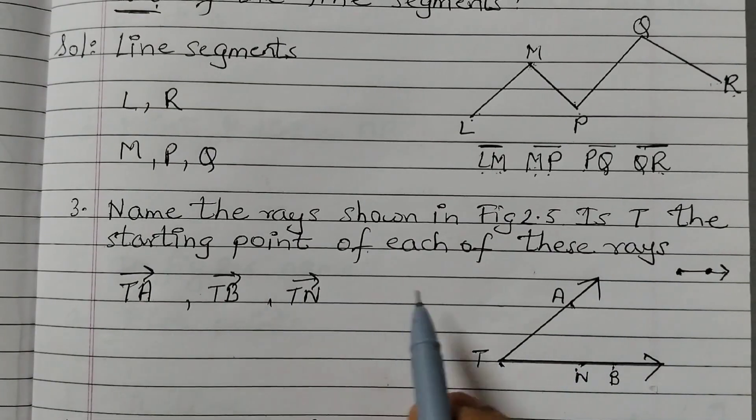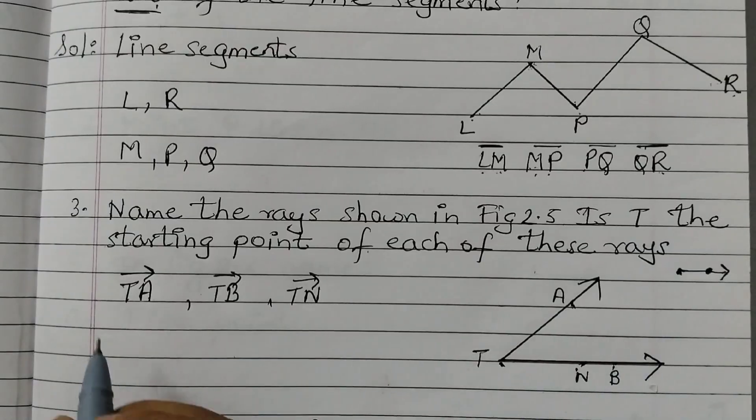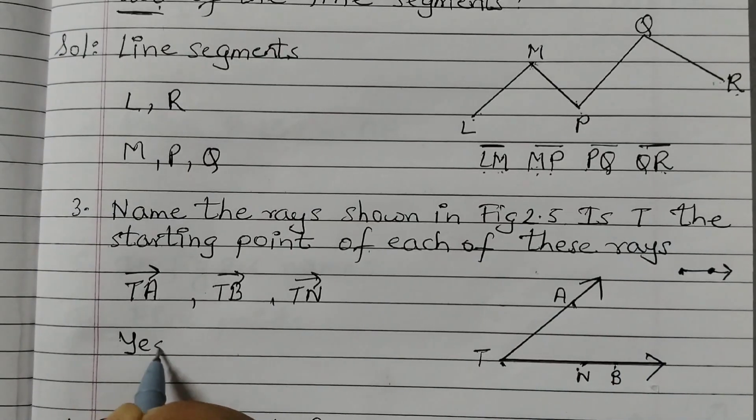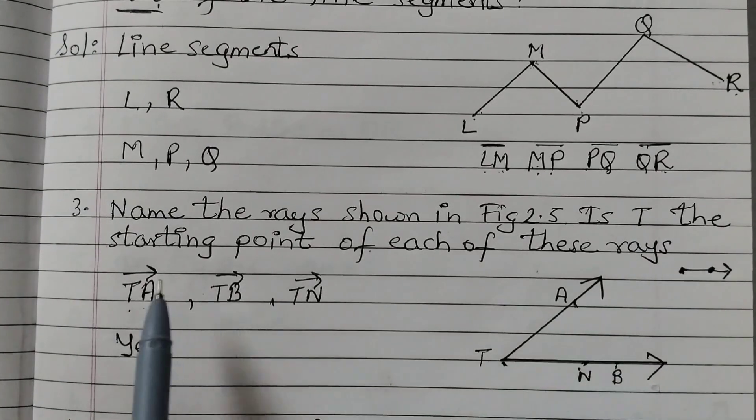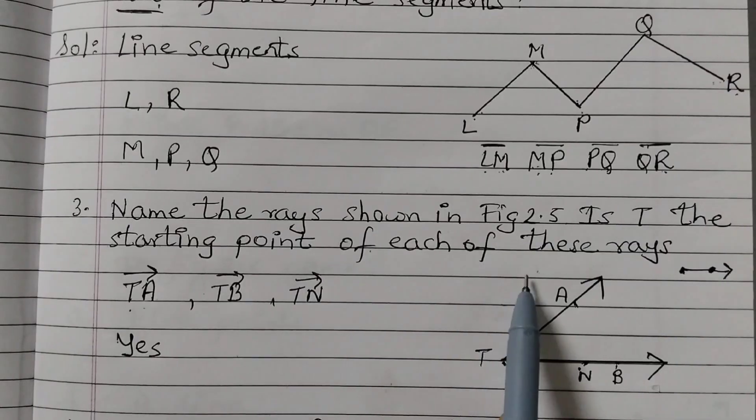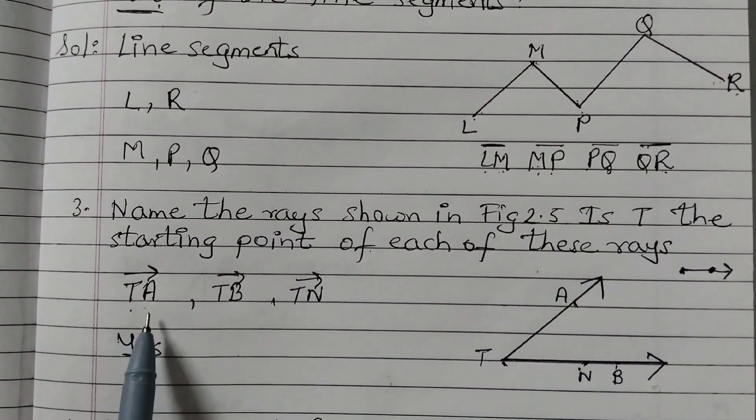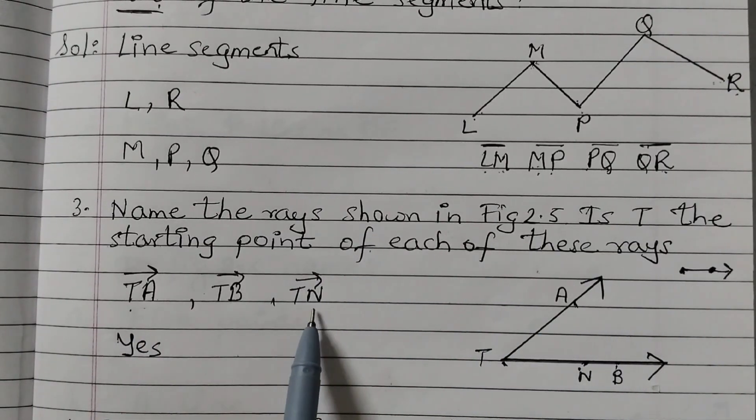Now is T the starting point of each of these rays? Yes. The answer is yes. T is the starting point of each of these rays: TA, TB and TN.